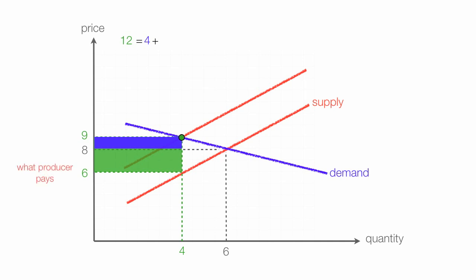The producer pays $2 of the tax, and their total tax bill is 2 times quantity, which is 4. So their total tax is 8.